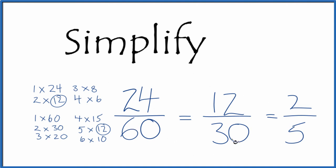These are equivalent fractions. If you divide 24 by 60, 12 by 30, 2 by 5, you'll get the same answer. It's just that we've simplified or reduced 24/60 down to 2/5.